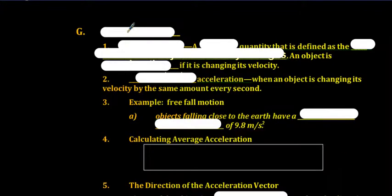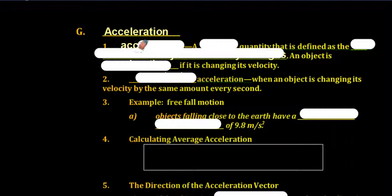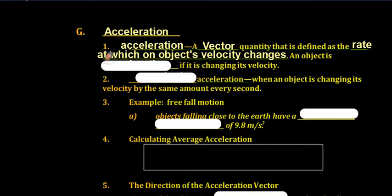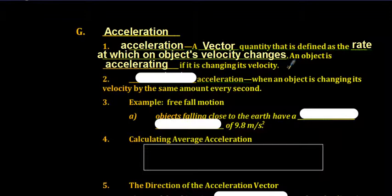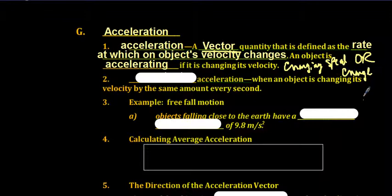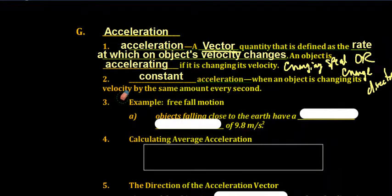This brings us to our final topic: acceleration. Acceleration is a vector quantity defined as the rate at which an object's velocity changes. An object is accelerating if it is changing its velocity. Velocity can be changed in two ways: by changing your speed, or — because velocity is a vector — by changing your direction. Constant acceleration, which we will deal with mostly in this class, is when an object changes its velocity by the same amount every second.